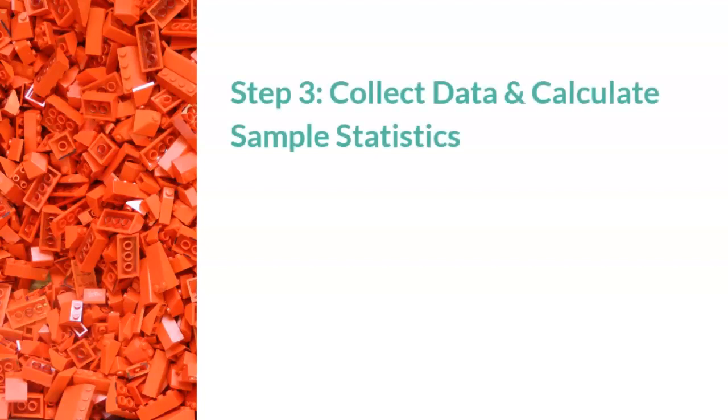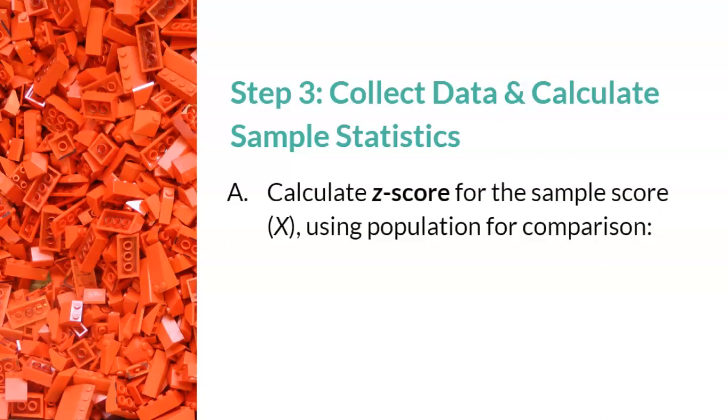Step 3, the red lego, is to collect data and calculate sample statistics. This step involves calculating the z-score for the sample score x using population for a comparison. This is the formula. Notice it looks a lot like the z-score formula from chapter 3. That's because it is. Since we are comparing the sample to the population, we just replaced m for mu and sd for sigma. We kept x because that is our sample. This is the shortest step, but often the one where students make mistakes, because they want to use the z-score formula from chapter 3 instead of this modified one from chapter 4.